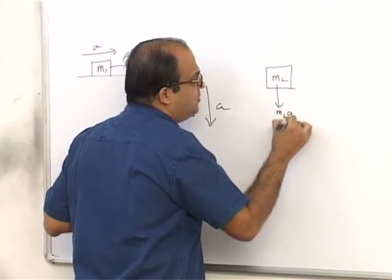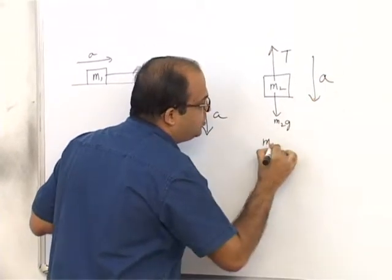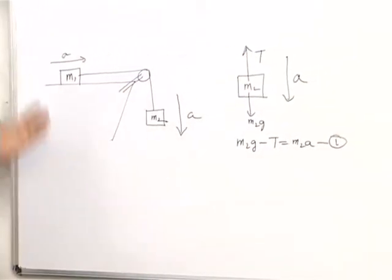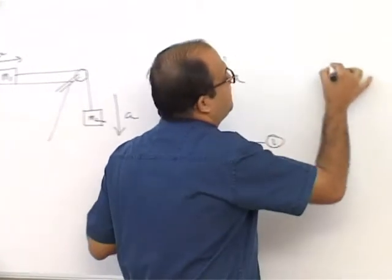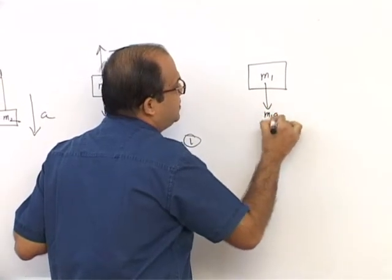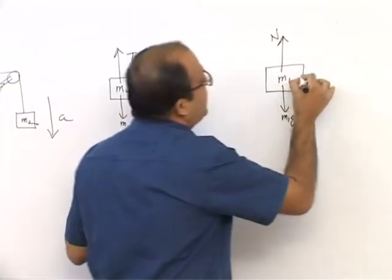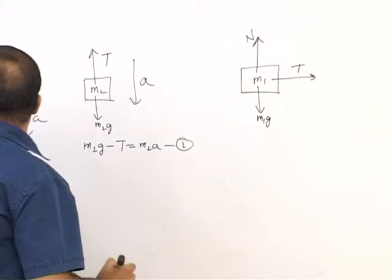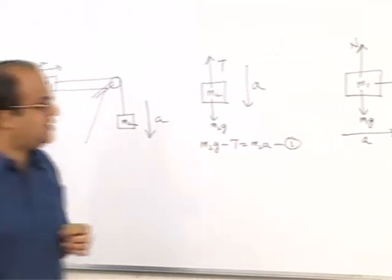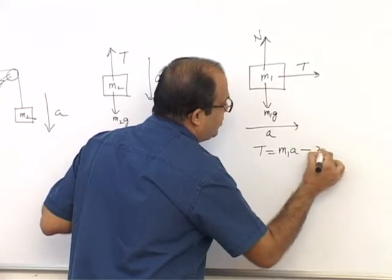For M2: M2G acts downward, tension acts upward, and acceleration is downward. So M2G minus T equals M2A — equation 1. For M1: weight acts downward, normal reaction acts upward, tension acts along the string, and acceleration is to the right. Looking at horizontal forces: T equals M1A — equation 2.